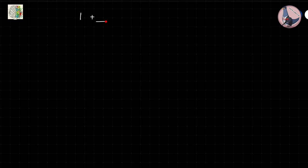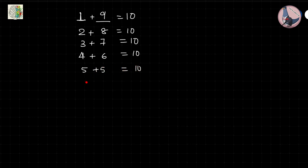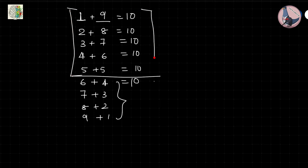Do you know what should be added to 1 to make it 10? I am pretty sure you know it is 9. These are 10-complements of each other. If I add 1 to 9 it will become 10. Similarly, 2 added to 8 is 10, 3 added to 7 is 10, 4 added to 6 is 10, 5 added to 5 is 10, 6 and 4 is 10 — and after this it repeats: 7+3, 8+2, 9+1. These are the only pairs.